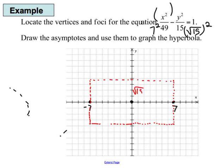I'm going to draw a box that is going to have the vertices on the midpoint and will be square root of 15 from the center. So this is square root of 15. This box helps me draw my asymptotes.